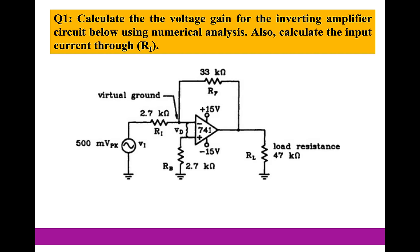Starting with this setup and the circuit, the question is to calculate the voltage gain for the inverting amplifier circuit below using numerical analysis. We also want to calculate the input current through R1. So what we would like to find is first the gain, which is AV, of the operation amplifier, and also the current passing through R1.